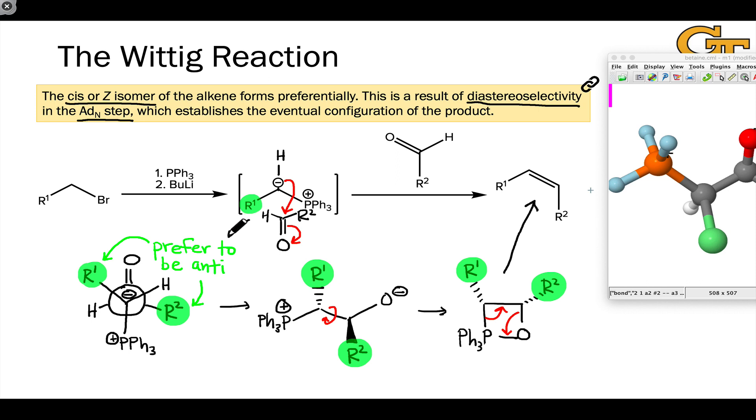The trans alkene would come from the transition state in which R1 and R2 are gauche, in other words, in which R1 and H switch places.